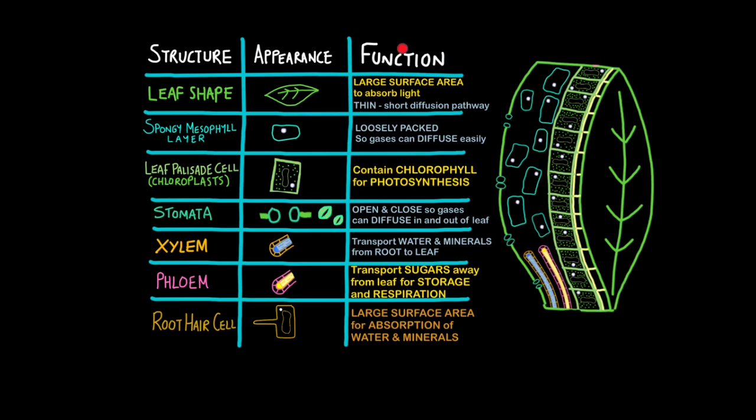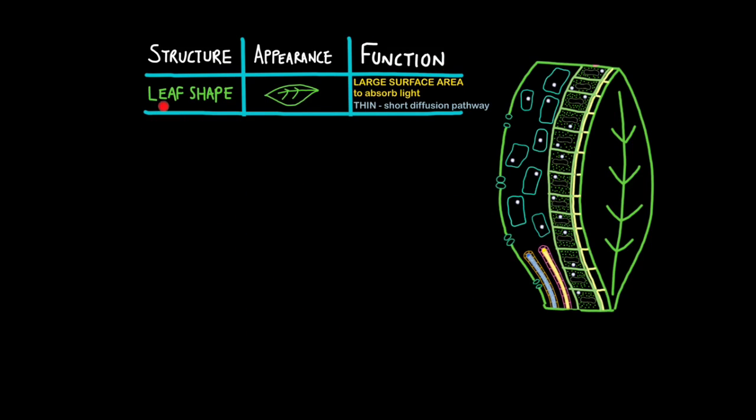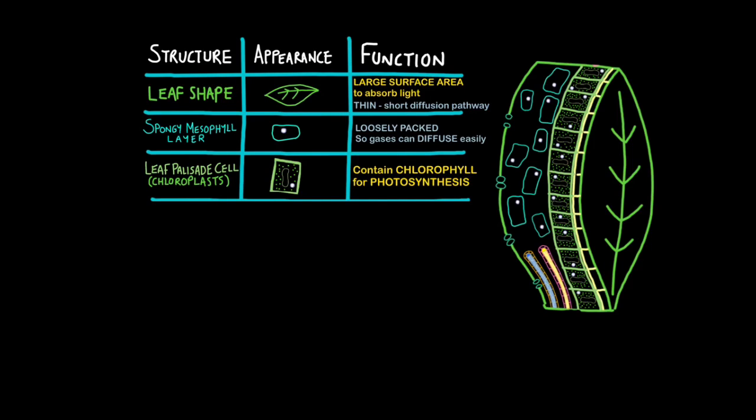This table will help you summarize the main points. Firstly, leaf shape. You can see that we have a large surface area to absorb sunlight. Also, leaves are very thin, which means that gases don't have to travel very far to get to the cells which carry out photosynthesis. Yellow points are for photosynthesis and blue points are for gas exchange. Next, the spongy mesophyll layer is loosely packed so gases can easily diffuse through the leaf. Next, for photosynthesis, leaf palisade cells near the top of the leaf contain many chloroplasts, and those chloroplasts are used for photosynthesis.